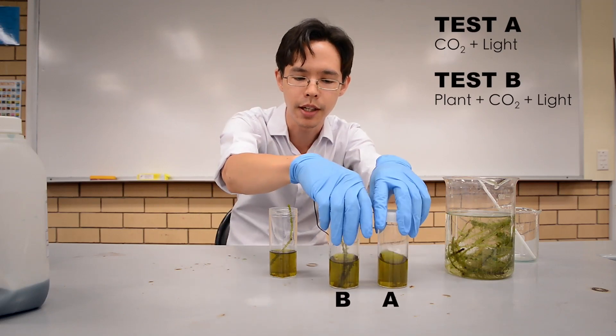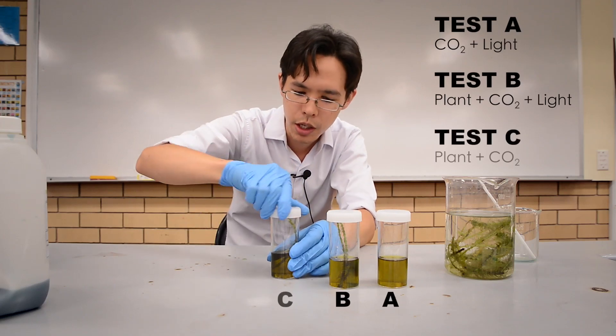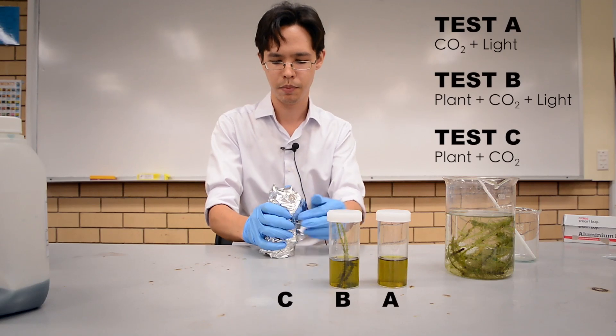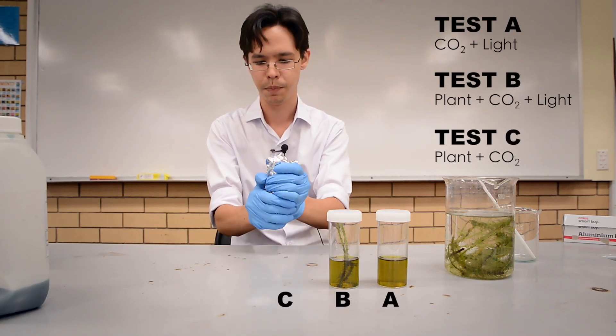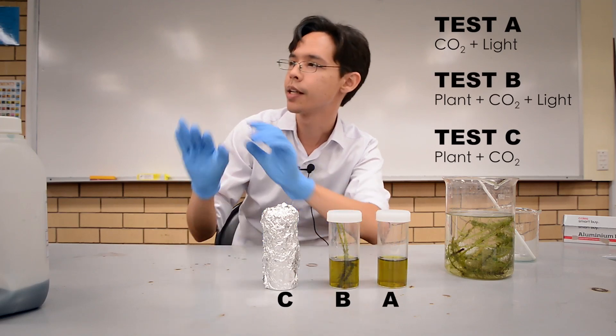This will be our control, which has just the solution, and we want to see how quickly the carbon dioxide will leave the water, how quickly it will effervesce. The next one, we will seal it in the container with the plant inside, and this will be set into the sunlight. And the last one, we're going to do the same thing in the sun, but we're going to cover it with aluminum foil to protect it from sunlight.